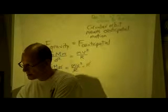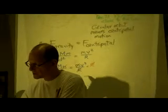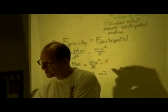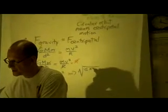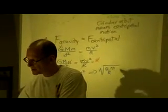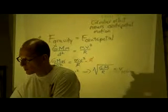GM over R is equal to V squared. And if you just go one step further, you can say, okay, well then, root GM over R is equal to the orbital speed, or orbital velocity.